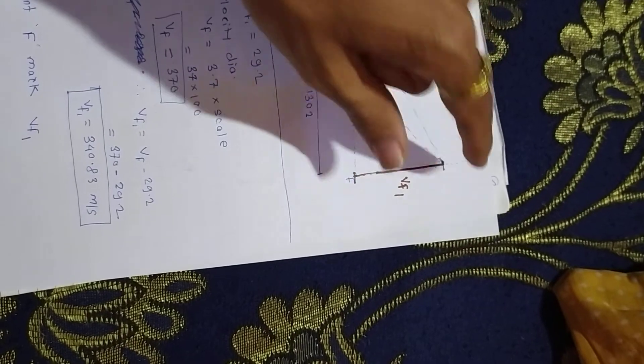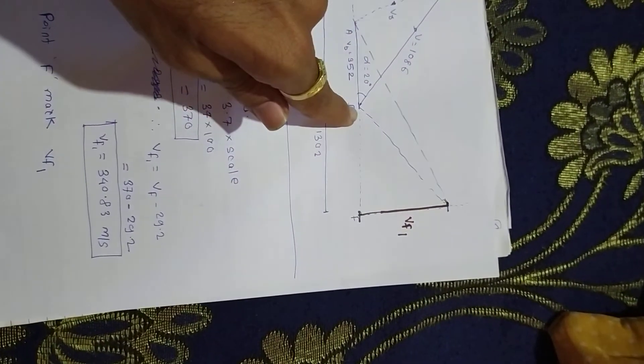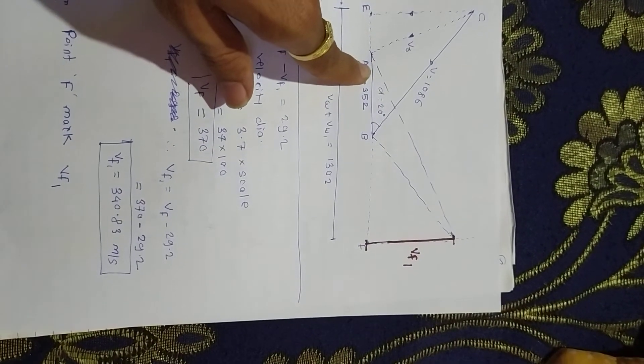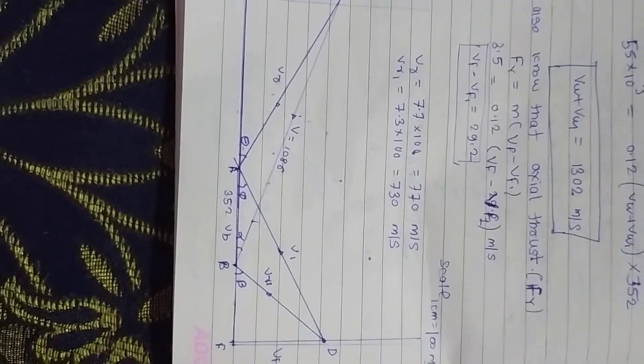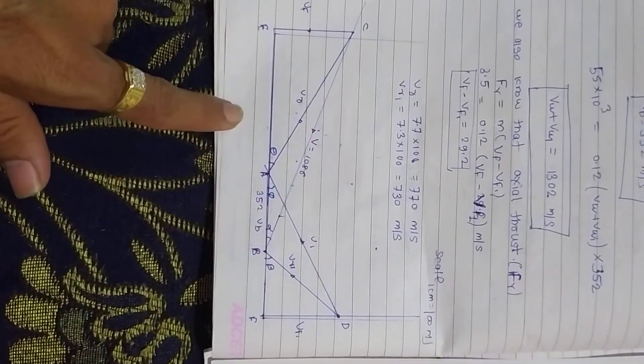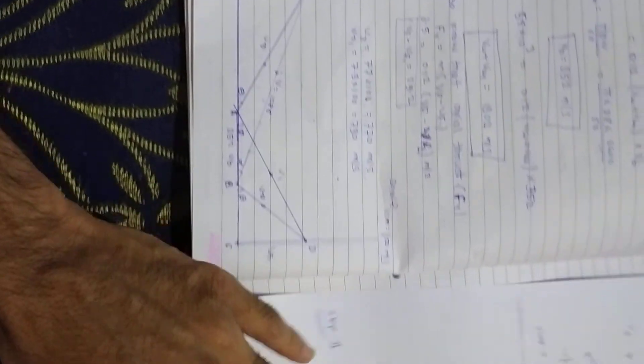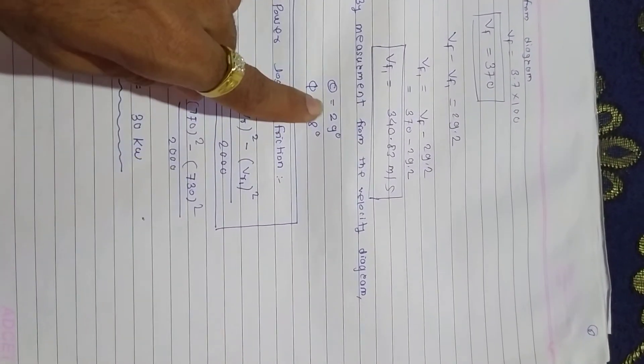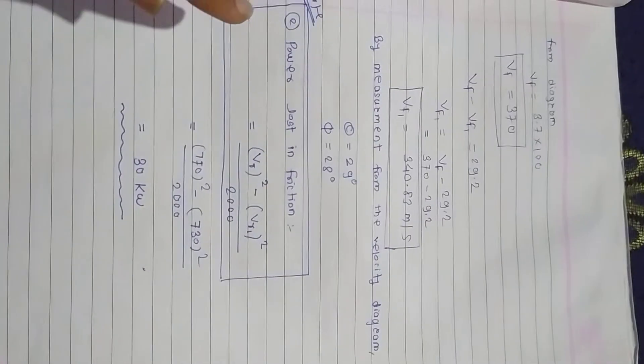If we first calculate VF, then join the lines from A to B. They ask for inlet blade angle and outlet blade angle. If you take proper scale and make the velocity triangle diagram, the angles theta and phi are around—theta is the inlet blade angle at 29 degrees, and phi is 28 degrees.